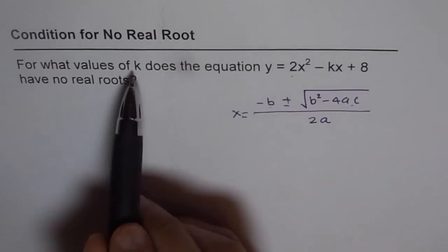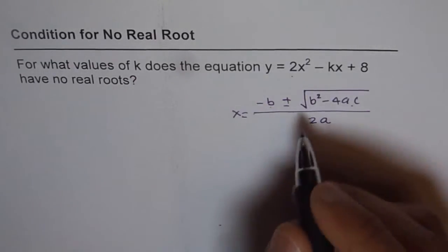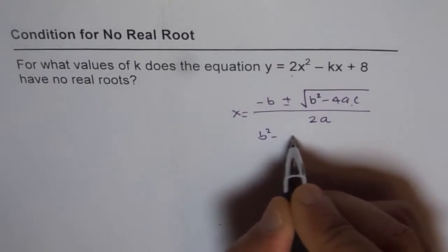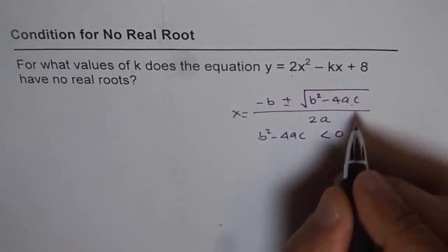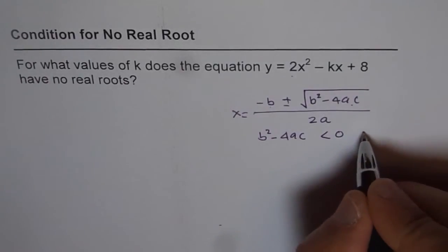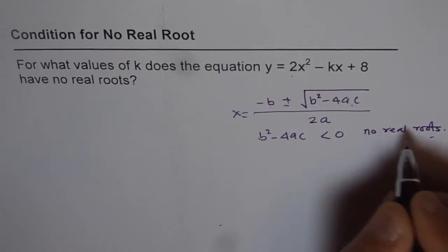So the question is, for what values of k does this equation have no real roots? That means b² - 4ac should be less than 0. It has to be negative. Only then we have no real roots. So that is the condition which we have to work on.